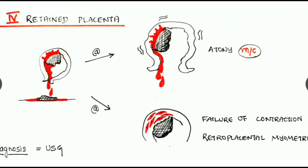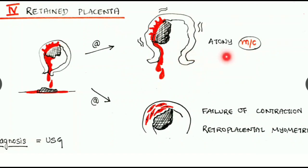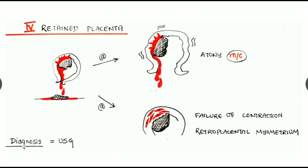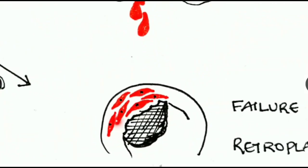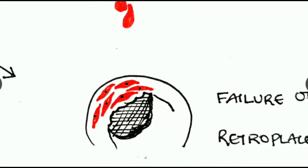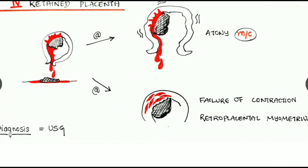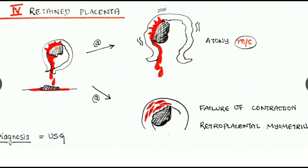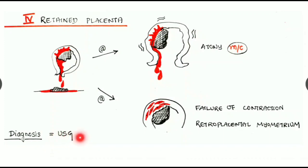Retained placenta can be due to atonic uterine walls where loss of tone causes incomplete expulsion of the placenta — this is the most common cause. The second type is due to failure of contraction of retroplacental myometrium; the muscle fibers just behind the attachment of the placenta fail to contract, so placental fragments are not expelled completely, causing continuous bleeding. It is diagnosed by ultrasonography.